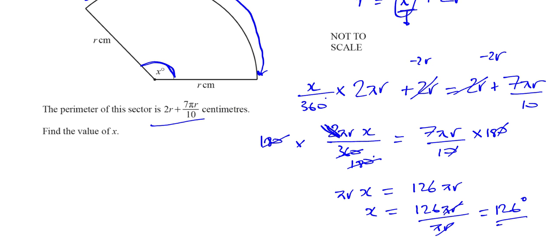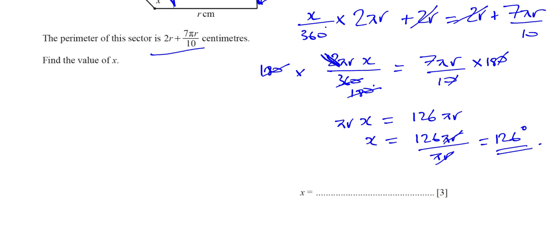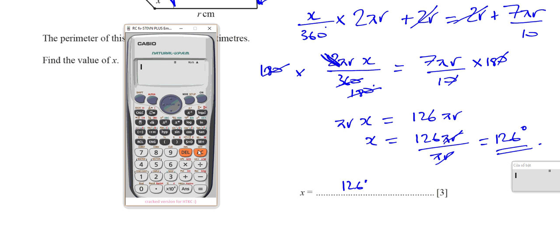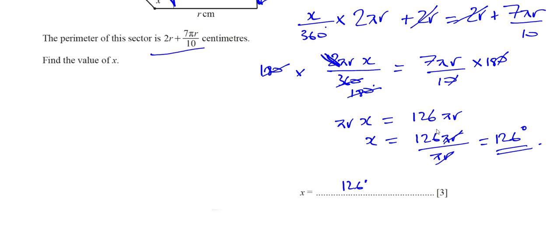And there's the answer for part b. The answer is 126 degrees. Let me just make sure. We said that 7 times 18... 126, yes we're right. So x is equal to 126 degrees and that's part b.